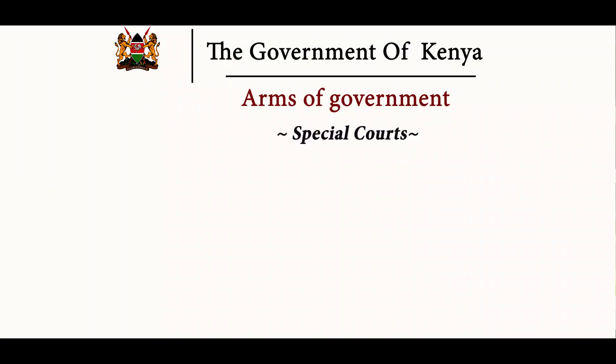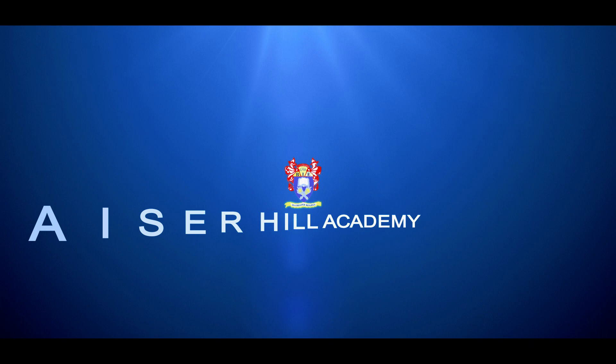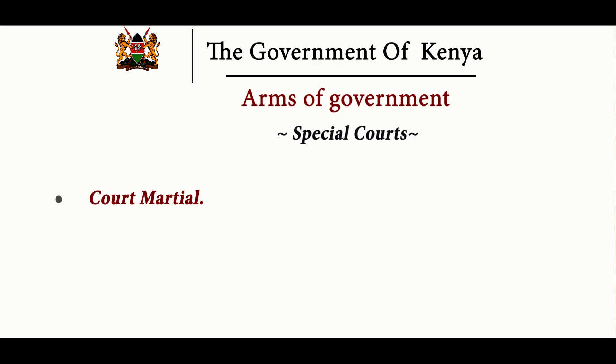We also have other courts called special courts, which hear specific cases. We have the juvenile court, court martial, Kadhi's court, and industrial courts. The juvenile court, also called the children's court, makes sure that children enjoy their rights and hears cases involving young persons in criminal matters. Court martial is a court that deals with cases from the military — if military members have broken military laws, they are taken to court martial. Kadhi's court hears cases from the Muslim community concerning their culture and tradition.